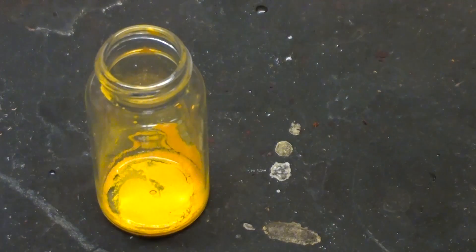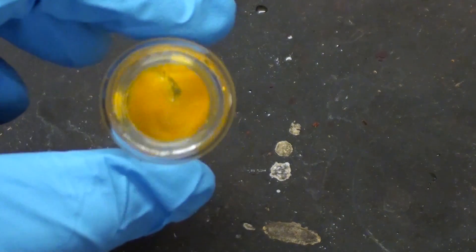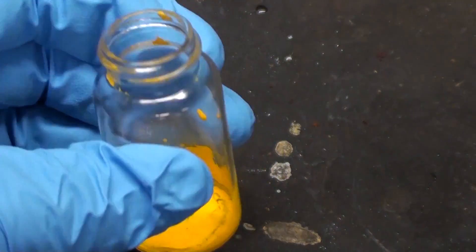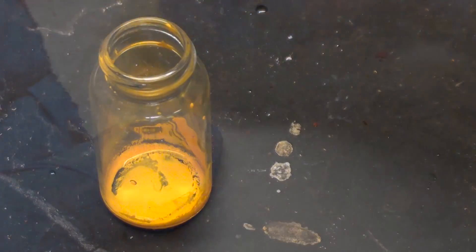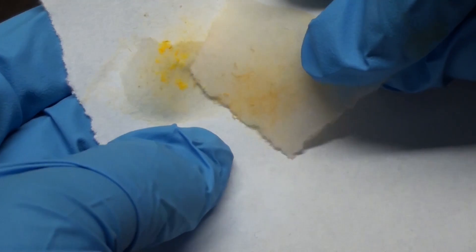Now before you go running off and testing everything for lead, I still recommend using a proper commercial lead testing kit. I'll show you why. This is a sample of lead based paint I was able to obtain. I'm certain it contains lead but when tested with our test paper there is no clear color change.